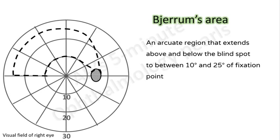An arcuate region that extends above and below the blind spot to between 10 and 25 degrees of fixation is termed Bjerrum's area. It is here that most of the early glaucomatous field defects occur because the superotemporal and inferotemporal poles of the optic disc are most susceptible to early damage.